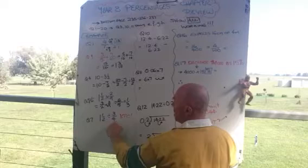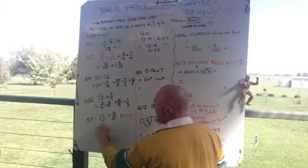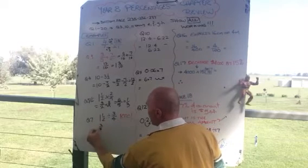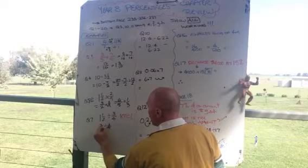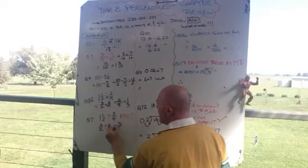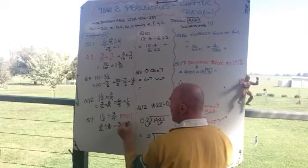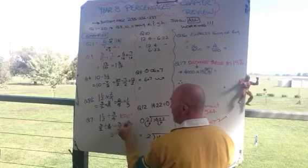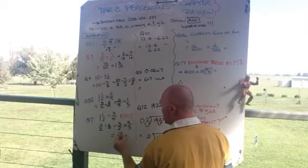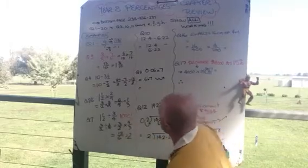Question 7: 1 and a half divided by 3 quarters. Your KFC when it's divided by. So that's 3 on 2 divided by 3 quarters. KFC: keep, flip, change. 3, 4 is 12 over 6. 12 over 6 is 2. Pretty straightforward.